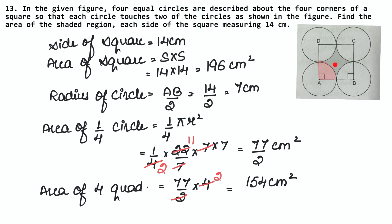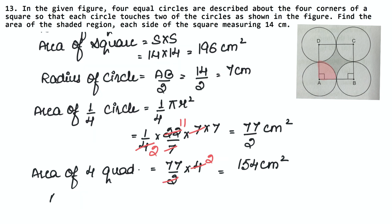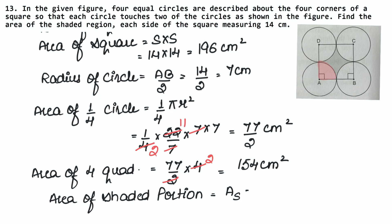Area of shaded portion equals area of square minus area of four quadrants equals 196 minus 154 equals 42 cm².